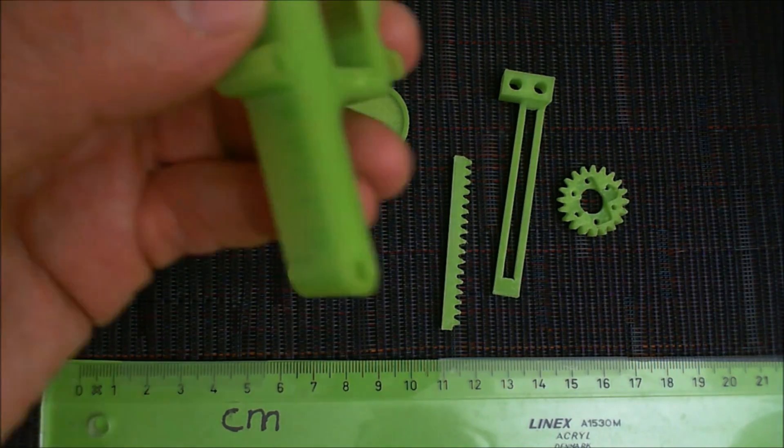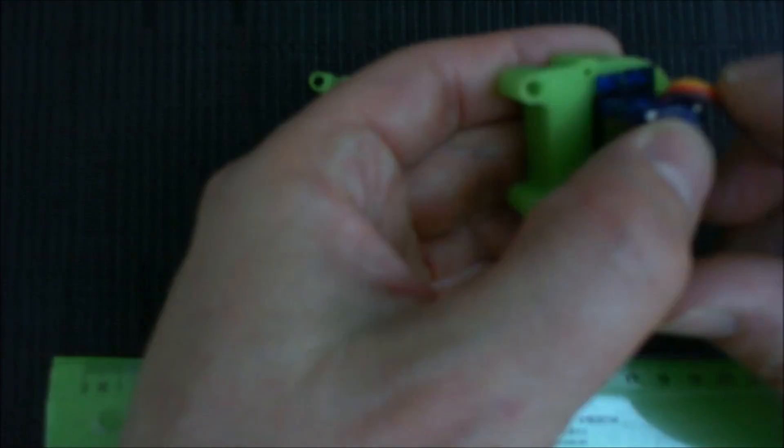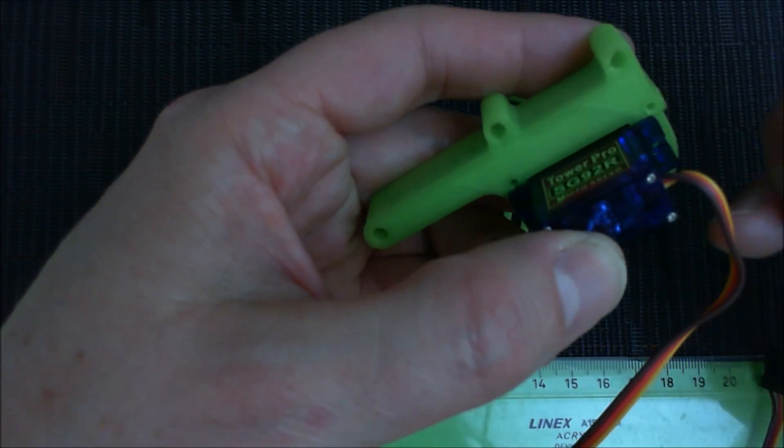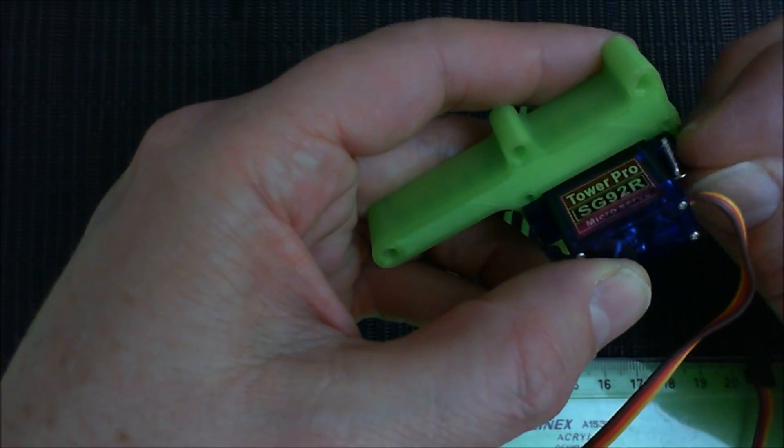So the first thing you want to do is put the servo inside the micro servo and attach the screws.